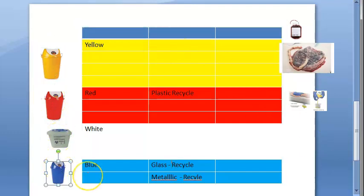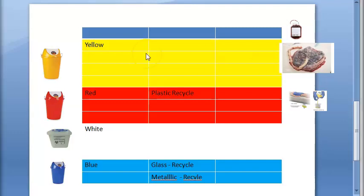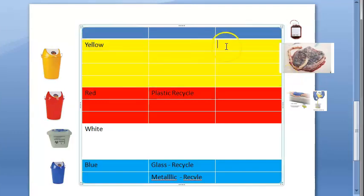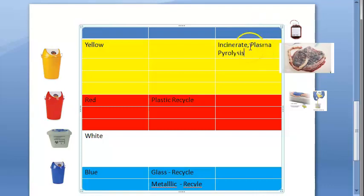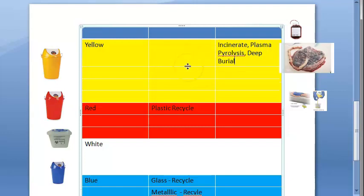For general waste, any color can be used — black, green, whatever. Now, for yellow bin waste — anatomical waste — what do they do with it? They will incinerate it at high temperature, or use plasma pyrolysis, which generates gases like carbon monoxide and hydrocarbons, or they will do deep burial.